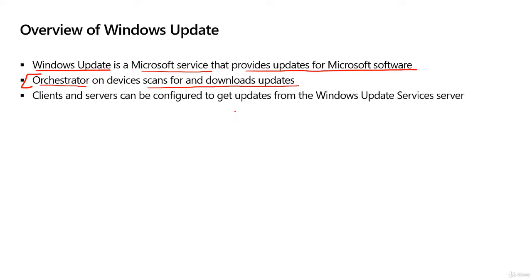The orchestrator is basically the agent that connects back to Microsoft, looks at available updates, identifies which updates are already installed and which ones are needed. Those updates get downloaded and installed on the client operating system. By default, we get all updates through the internet from the update.microsoft.com site.